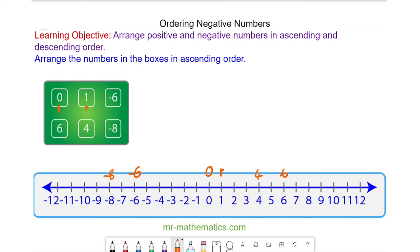The smallest number is the most negative number, which is in this direction. We can see negative 8 is furthest to the left. So negative 8 is the smallest number, and then we have negative 6, then 0.